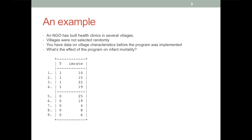Suppose a non-governmental organization has built health clinics in several villages, and we know these villages were not chosen randomly, but instead were chosen based on how much the program administrators thought the villages needed a clinic. We want to know how the program affected infant mortality. We observe 9 villages, and the treatment variable T is 1 for the villages that got the new clinics and 0 for the villages that didn't. IM rate is the infant mortality rate — that's our outcome of interest — measured in deaths per thousand, a year after the clinics went into operation.